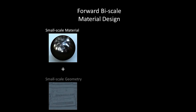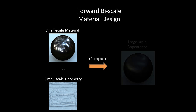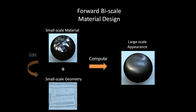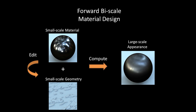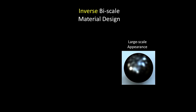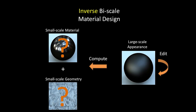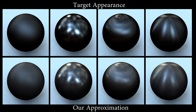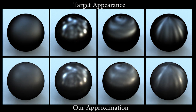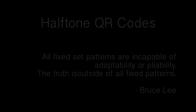One major shortcoming of existing bi-scale material design systems is the lack of support for inverse design. There is no way to directly edit the large scale appearance and then rapidly solve for the small scale details that approximate that look. We solved for this by searching two pre-computed large libraries: one including a wide range of measured and analytical materials, and the other procedurally generated and height map based geometries.